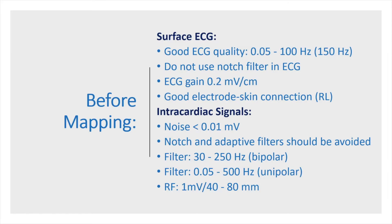Analyzing the P-wave morphology is the first step in the mapping of atrial tachycardias. We need a good quality ECG, and for that we need a perfect filter setting: high-pass filter to 0.05 Hz and low-pass filter to 100 Hz. In teenagers and adolescents, the low-pass filter should be set to 150 Hz. Setting the high-pass filter to 0.1 Hz may improve ECG quality, but we have to remember it creates patterns like Brugada syndrome and ST elevation.